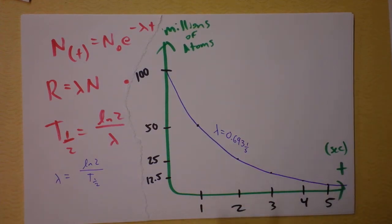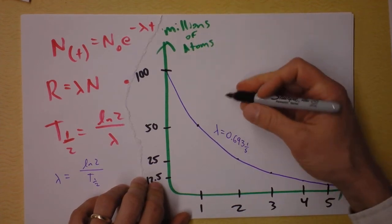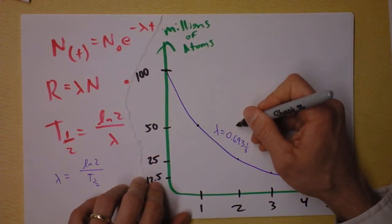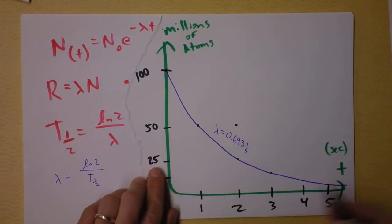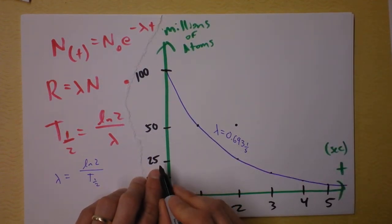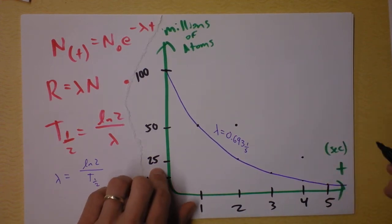Now, what if we had a half-life of 2 seconds? In that case we'd start with the same sample and when we get to 2 seconds then we'd have 50 million. And how long would it take to get to 25 million? Well, it would take 4 seconds to get that far. So we've got a different graph.